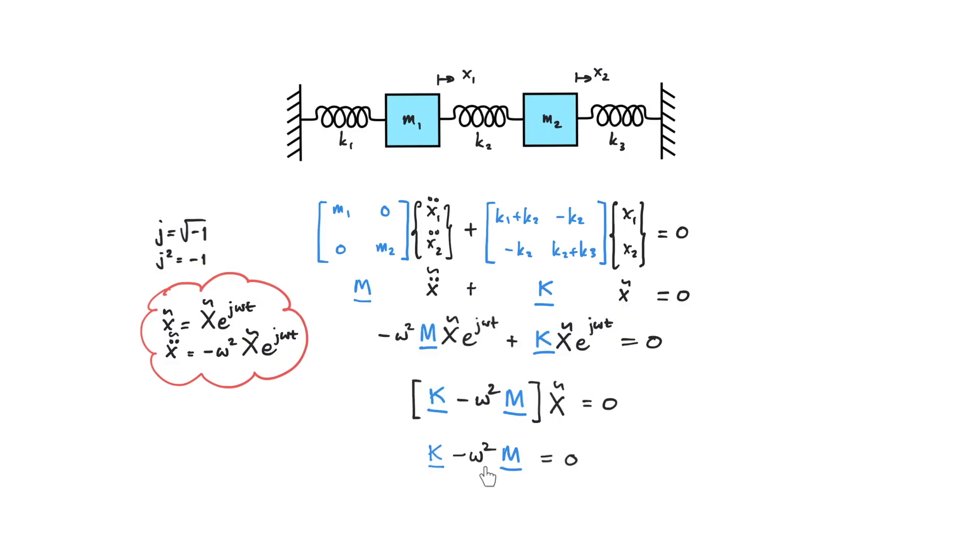So the next question is from here can we have the solution straight away that omega square equals to K over M? The answer is no because in these situations we cannot divide matrix by matrix straight away and get the solution.